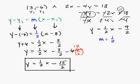So I'll do one more. Let's say I have the point negative 5, negative 9, and the equation 6x plus 4y is equal to 5.